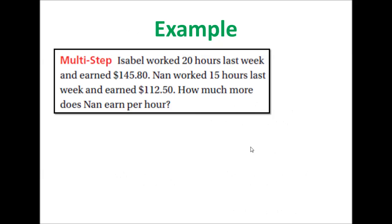So here's an example. Isabel worked 20 hours last week and earned $145.80. Nan worked 15 hours last week and earned $112.50. How much more does Nan earn per hour?